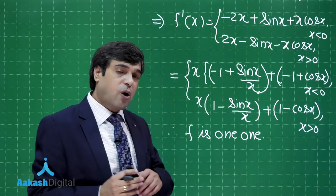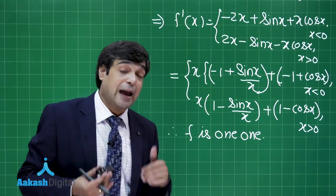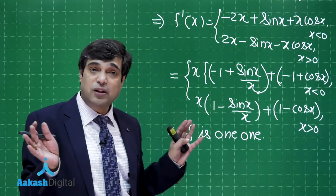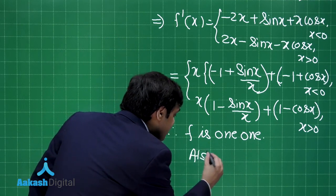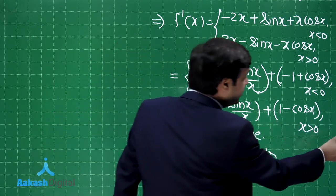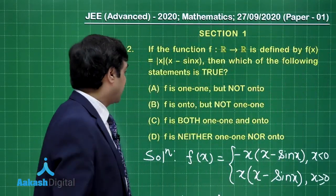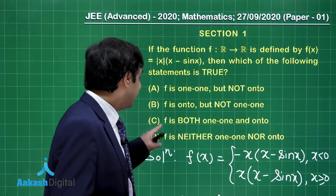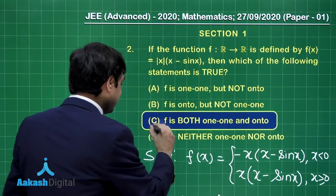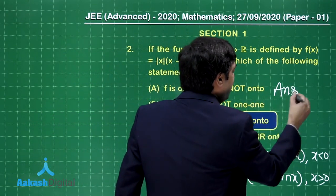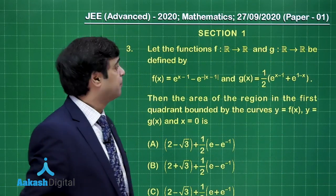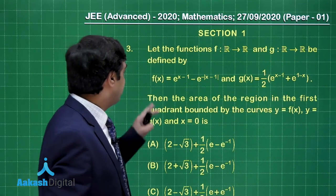Since f is strictly increasing and odd, it is one-one. As x ranges over all reals, f approaches −∞ to +∞, taking all values, so f is also onto. Therefore f is bijective. Checking the options, Option 3 states f is both one-one and onto — that is the required result. This is conceptually clear in how we planned the solution.